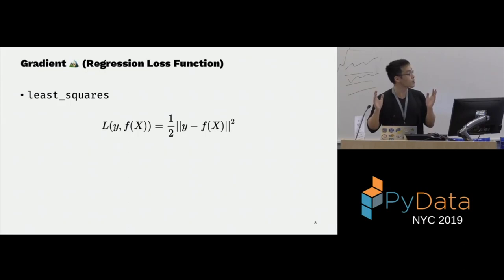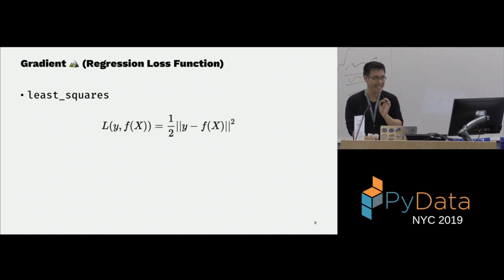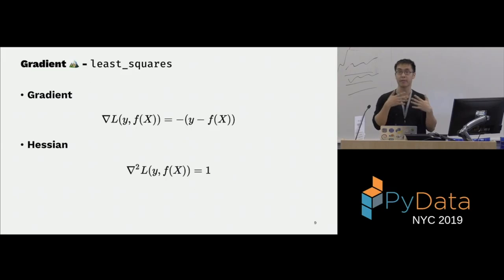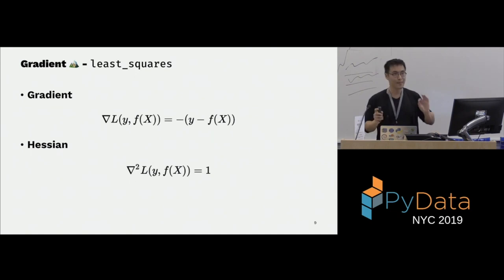Least squared loss is: you define a loss where Y is known during training, F is the function you're trying to learn, and X is your data — you take the difference and square it. Since it's gradient boosting, you can take the gradient of this loss. Note that the loss is a scalar value, but the gradient is a vector — its length equals the number of samples in your training set. You could also take the Hessian, which in this case is simply one — also a vector of ones.